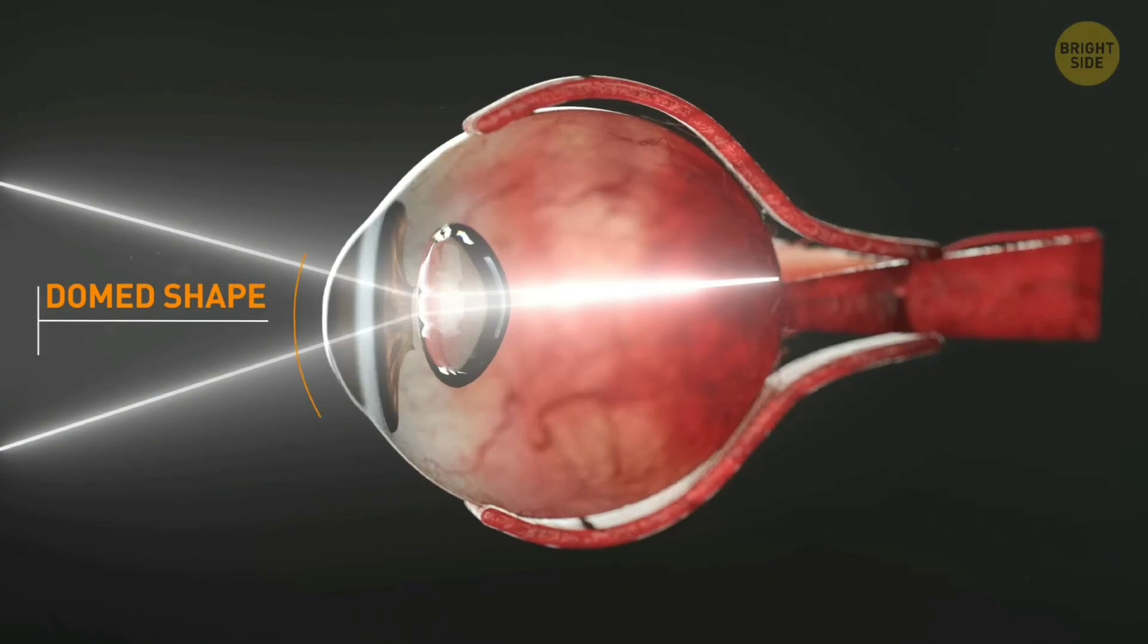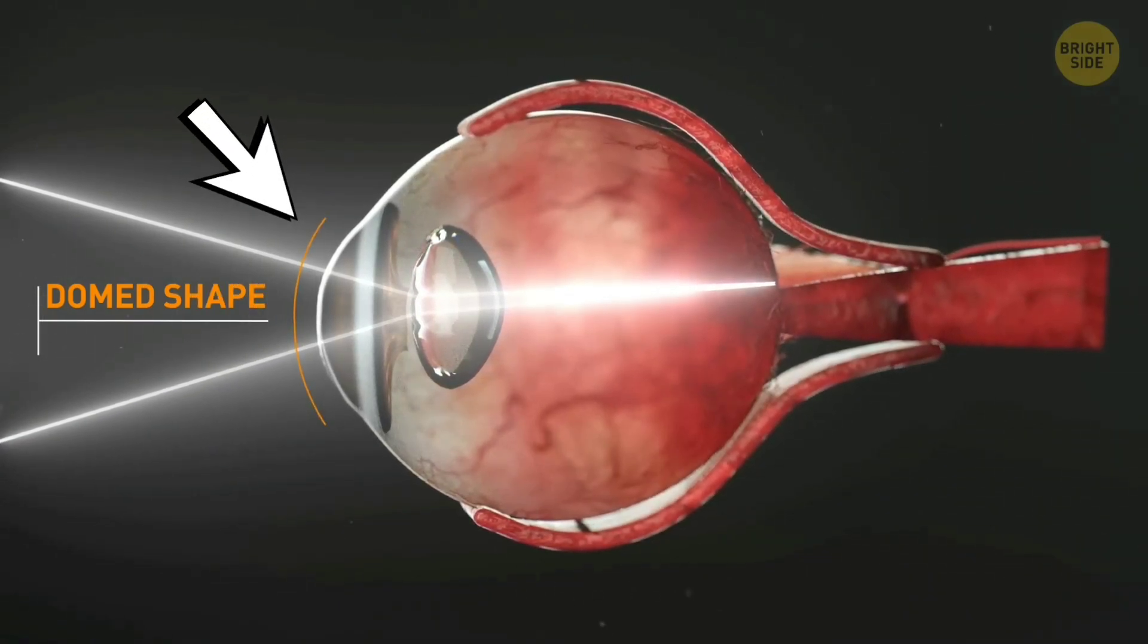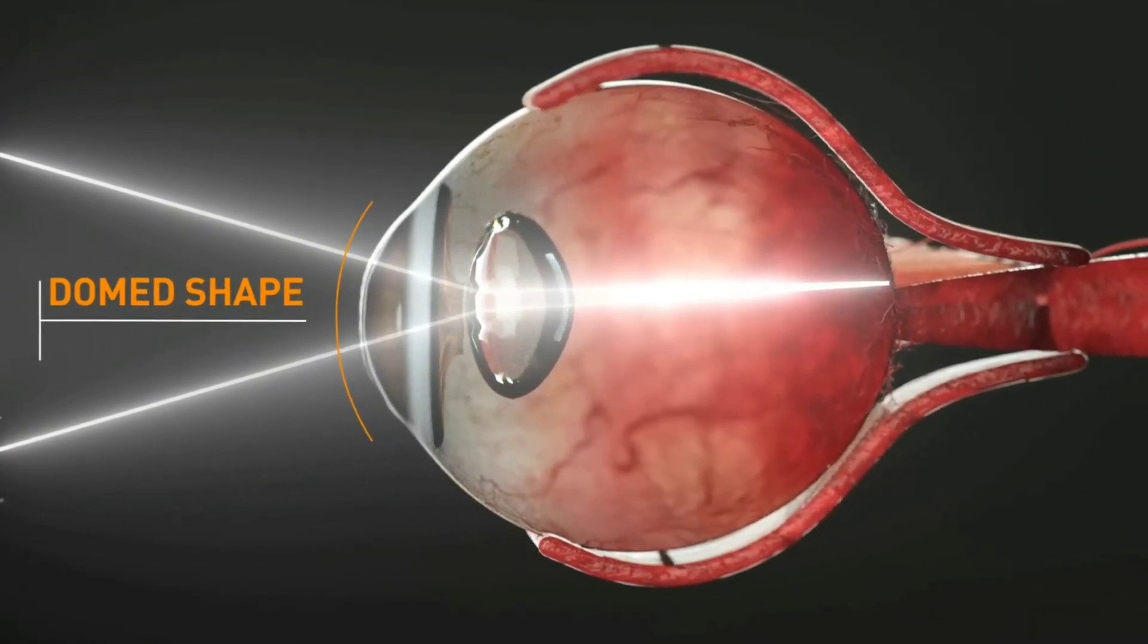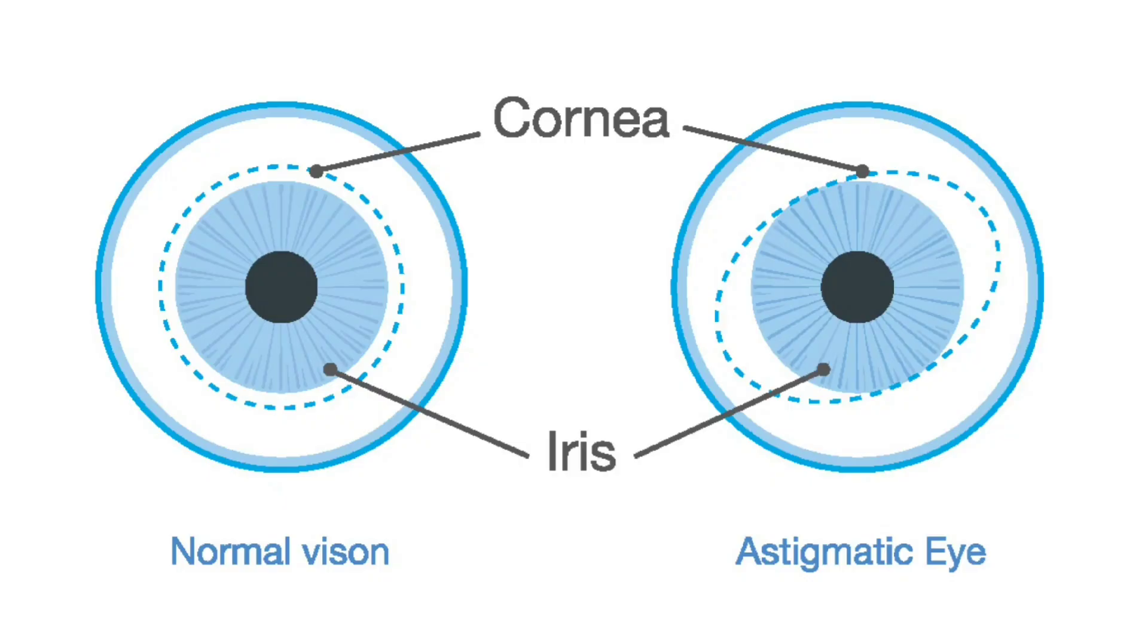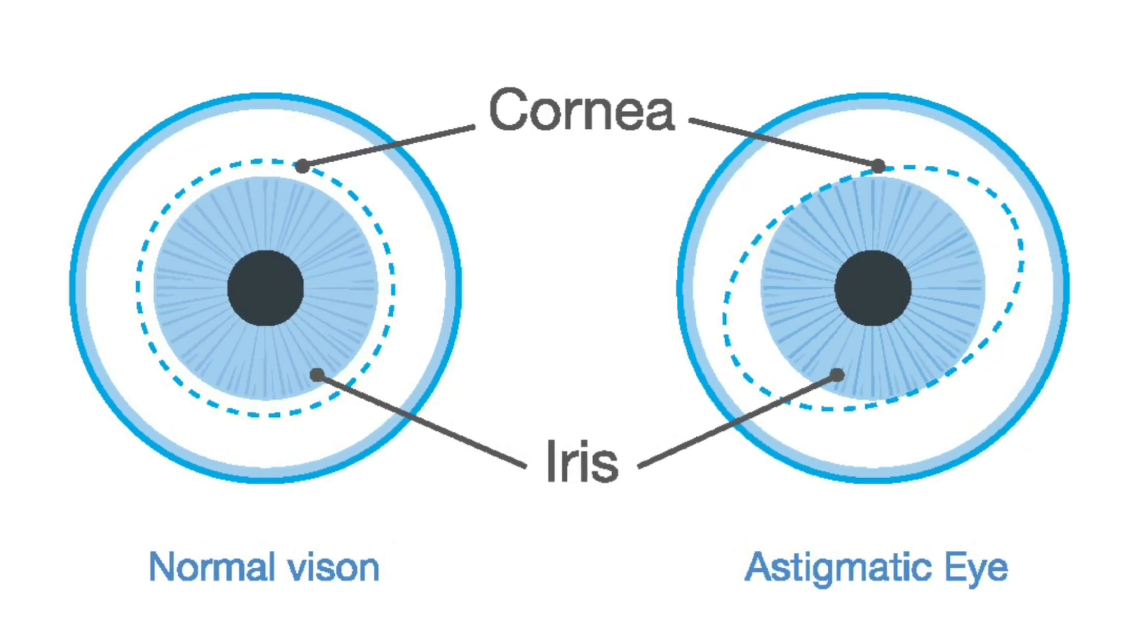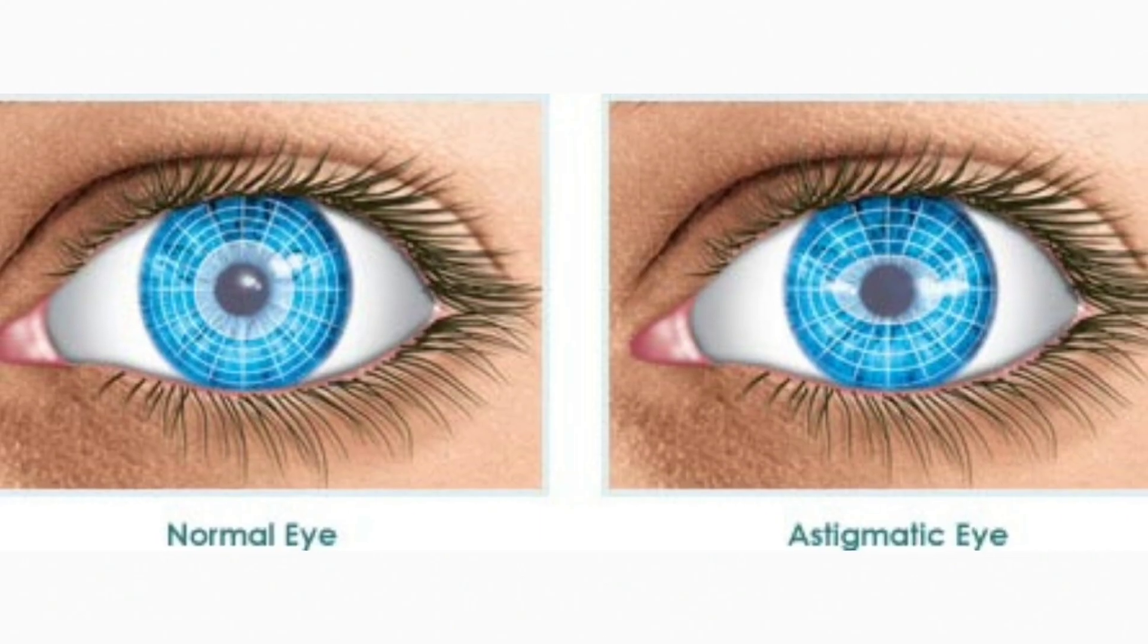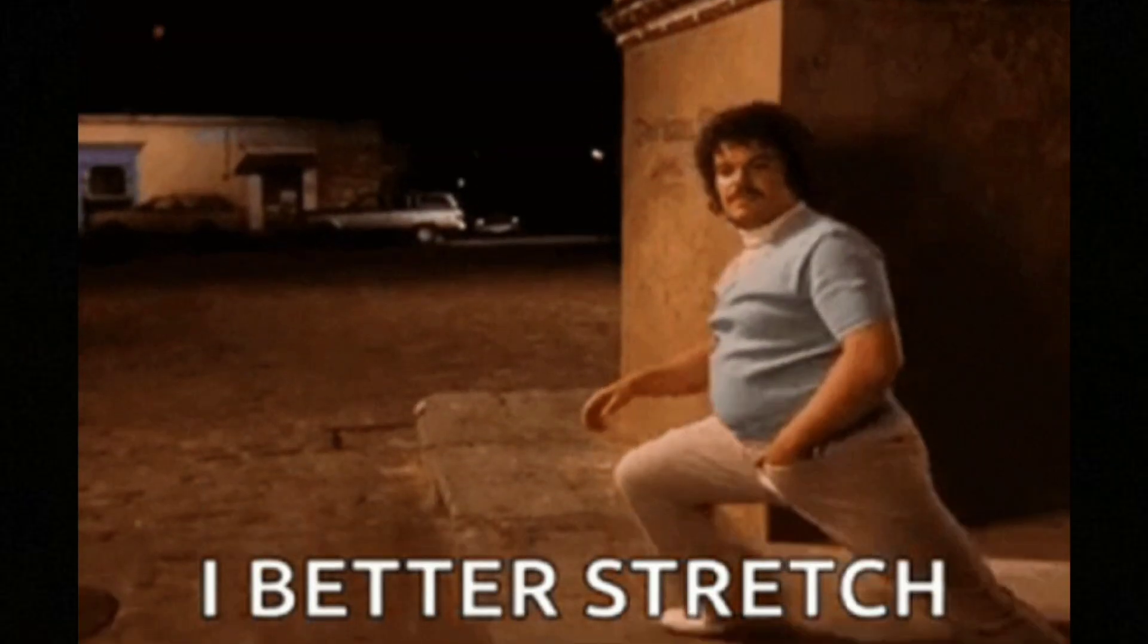So what's astigmatism in the first place? The cornea, or the clear curved surface on the very front of our eyes, is the thing that first bends light entering your eyes. Astigmatism typically means that your cornea is uneven. It's not a perfect part of a circle, but is instead stretched out in different directions, and this causes light to be bent differently in different directions.